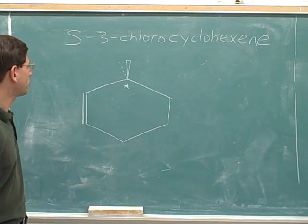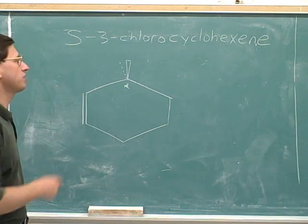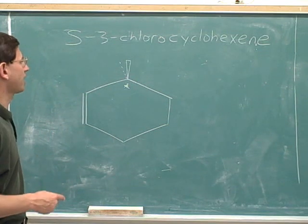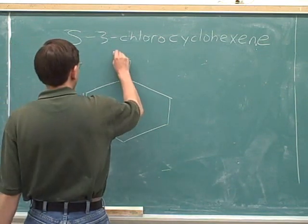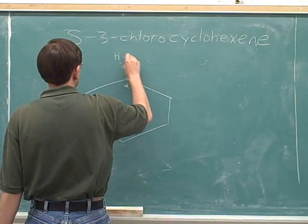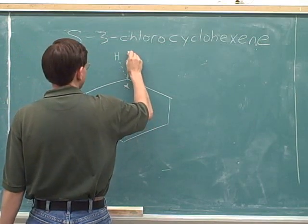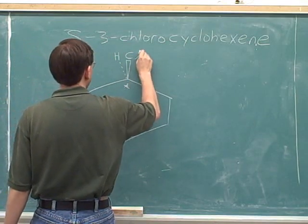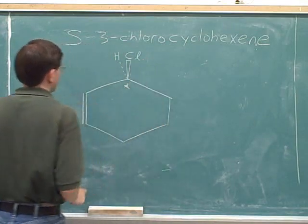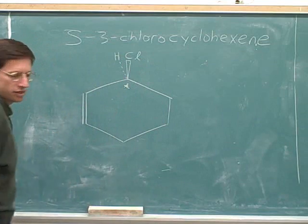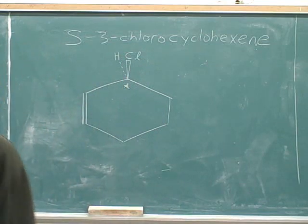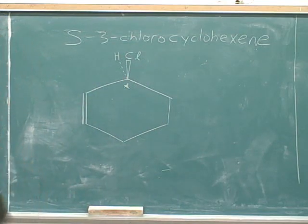Now, how do we know what an S would be? Well, we don't. Let's take a guess. We should initially guess that the hydrogen is on the dash, just because that's easier to work with. So I've guessed that the hydrogen is on the dash and the chlorine is on the wedge. Now we have to check whether we got that guess correct.